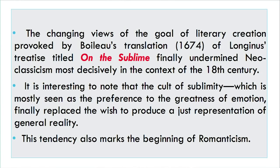You should note that the changing views of the goal of literary creation provided by Beaulieu's translation of 1674 of Longinus' treatise titled On the Sublime, a very important work, finally undermined neoclassicism most decisively in the context of the 18th century. It is interesting to note that the cult of sublimity, which is mostly seen as the preference of the greatness of emotion, finally replaced the wish to produce a just representation of general reality. This tendency also marks the beginning of Romanticism.